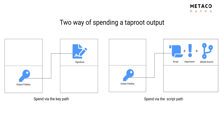In Taproot there are two ways of spending a Taproot output. One way is called spend via the key path — if you use this, on-chain it's very tight: there is only a single signature and a single public key, and nothing else, so it's the most optimal way of spending on Taproot. But you can fall back on another way called spend via the script path, where instead of only a signature appearing on the blockchain, you will have a script with a Merkle branch.